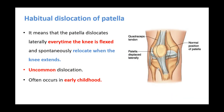The third type is habitual dislocation of patella, which means the patella dislocates laterally every time the knee is flexed and relocates spontaneously when the knee extends. Whenever the individual flexes the knee joint there is dislocation, and it relocates spontaneously on extension. This is an uncommon dislocation, often seen in early childhood.